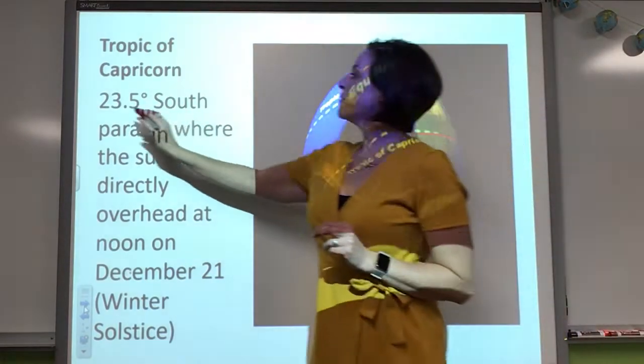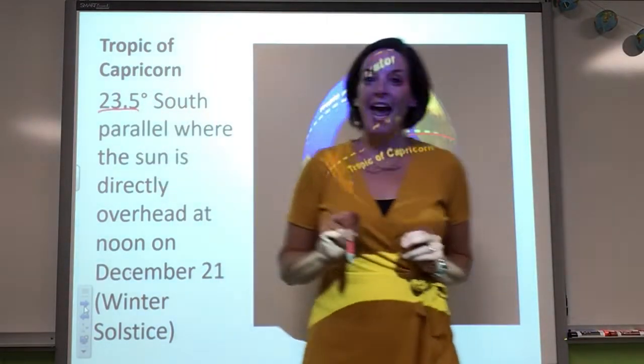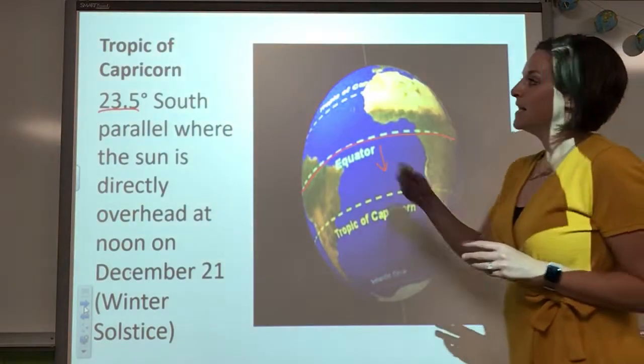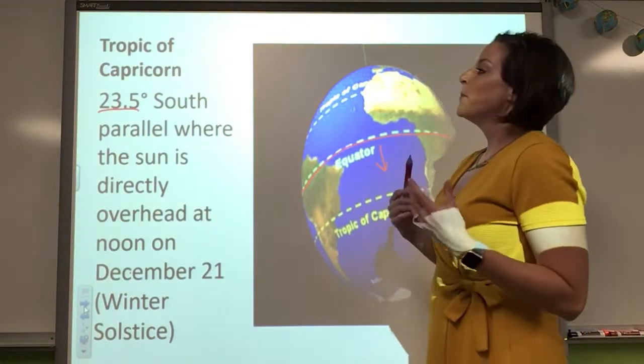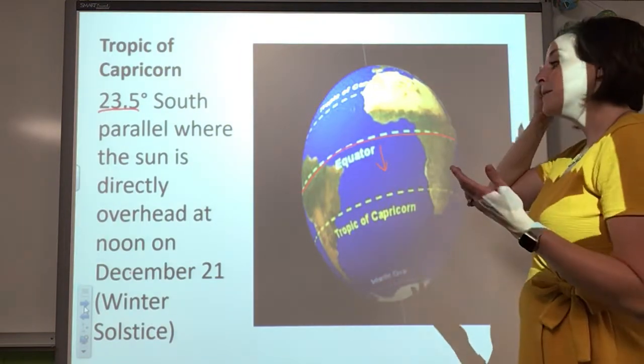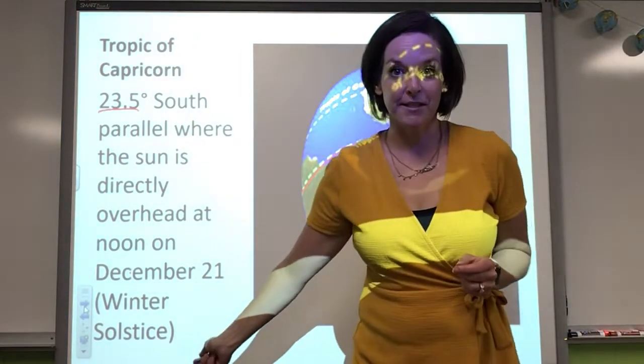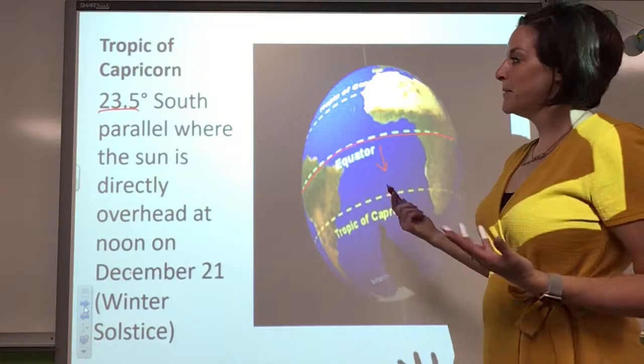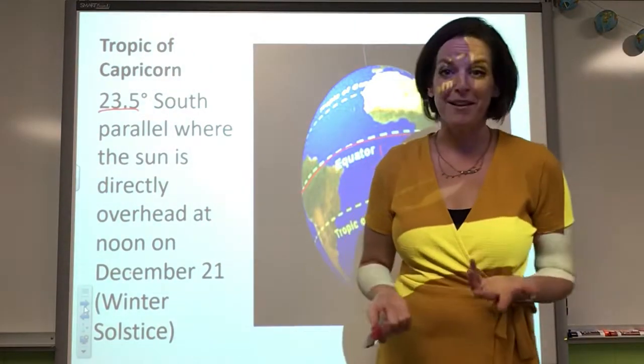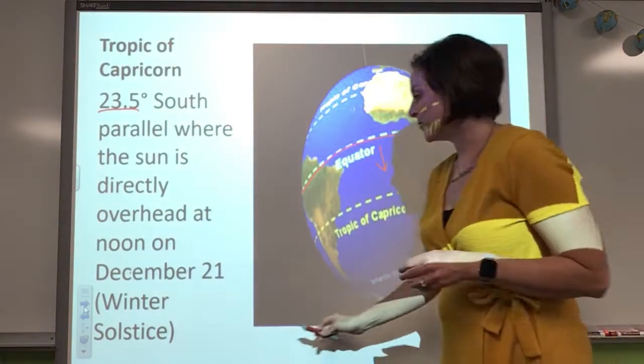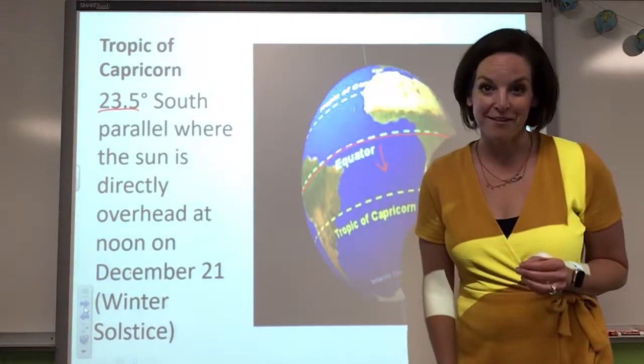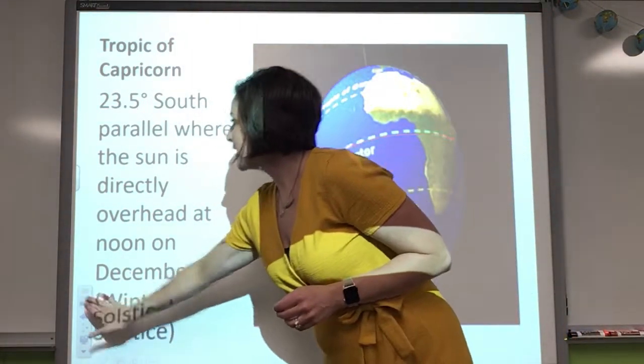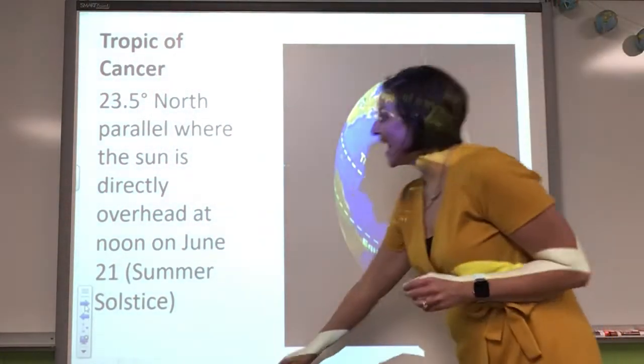And we are south 23 and a half degrees south, is the Tropic of Capricorn. Pretty much, this is going to be our winter solstice. So if you want to be technical, it's where the sun is directly overhead at noon on December 21st.